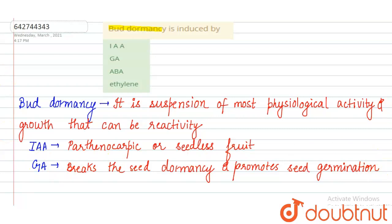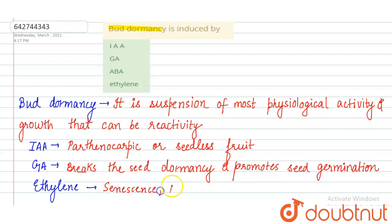Then another option was ethylene. Ethylene is a gaseous plant hormone and it induces senescence and abscission of leaves, meaning the shedding of leaves, flowers, and fruits.